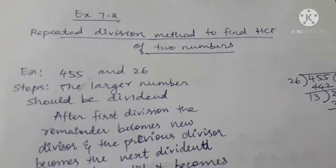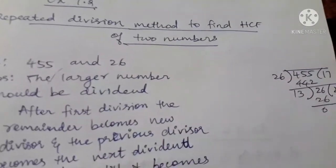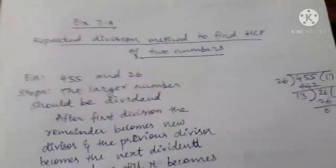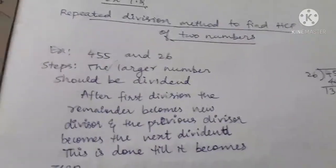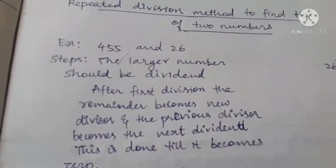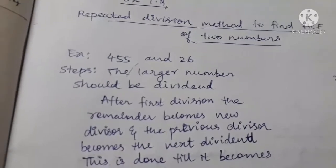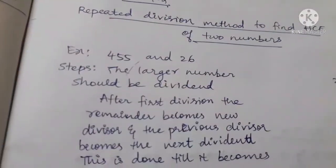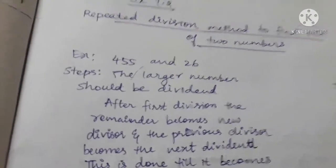In exercise 7.2, two questions are very, very important. One is the repeated division method to find the HCF and one is the repeated subtraction method to find the HCF. Both are only to find the HCF — only the method changes. One is repeated division, another is repeated subtraction.